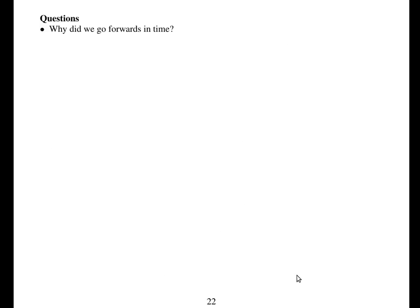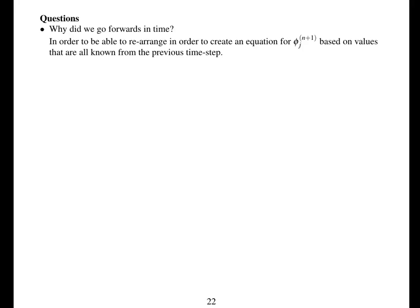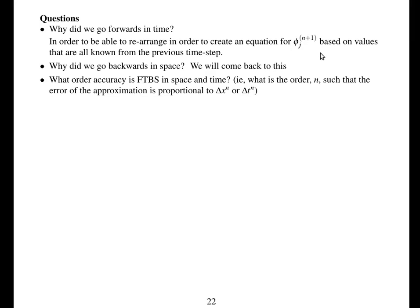Some questions about this scheme. Why did we go forwards in time? The answer is we want to rearrange to calculate phi at time level n+1 based only on values known from the previous time step. Why did we go backwards in space? That's something we'll come to in subsequent lectures. What's the order of accuracy of forward in time, backward in space — both in space and time? What influence will the errors have on the solution? These are things we're going to address in this lecture.